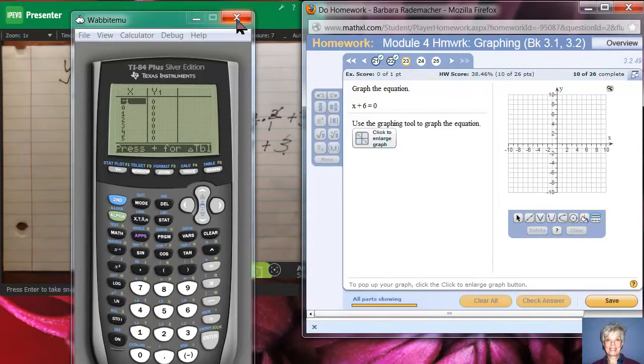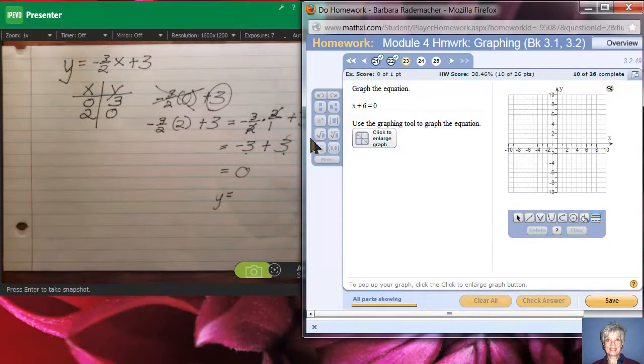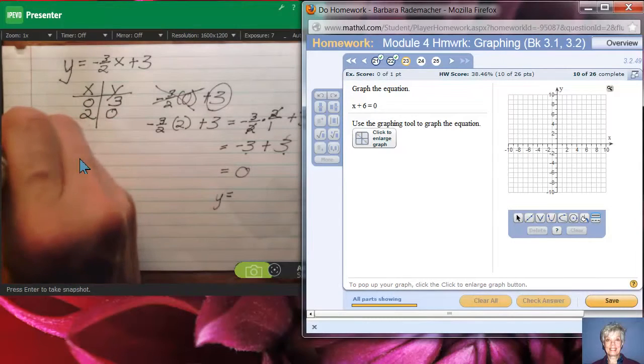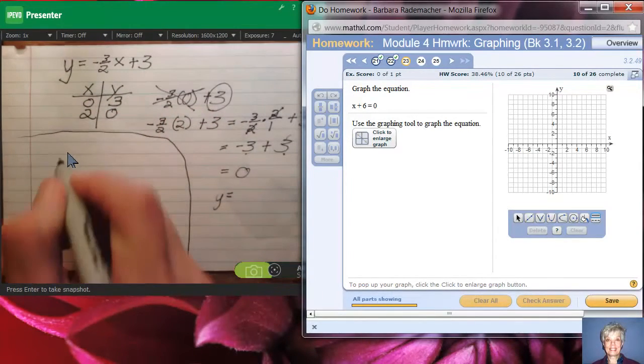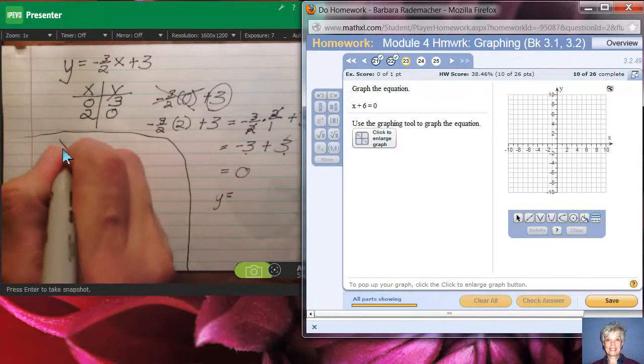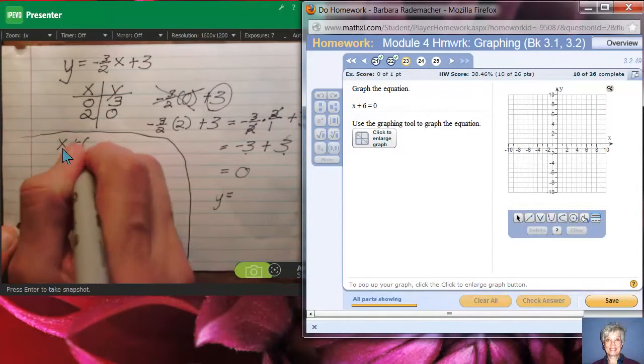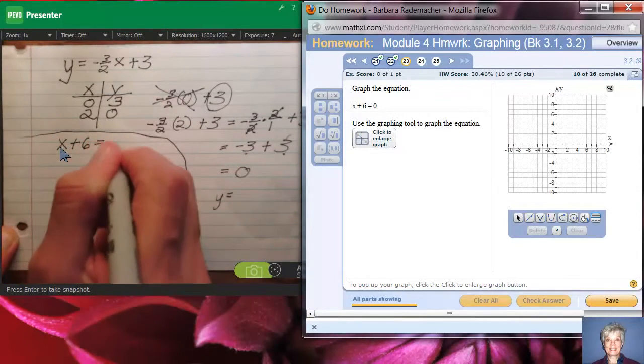So I'm just going to make it go away and do this on paper. You can do it right here. X plus 6 equals 0.